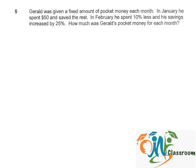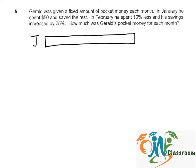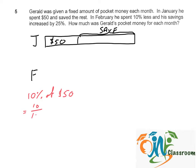We can represent this with a model. In January, he spent $50 and saved the rest. In February, he spent 10% less. 10% of his spending in January would be 10% of $50, which is 10 over 100 times 50, giving us $5.